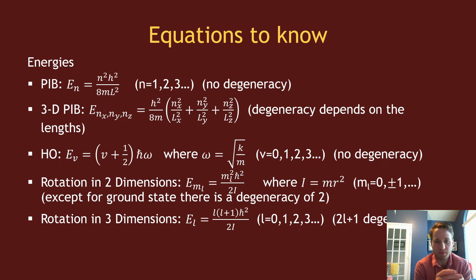Here's some of the equations I expect you to know. What are the energies for particle in a box, for the harmonic oscillator, for rotations in two and three dimensions? These are all relatively simple equations. Know the limits of the quantum numbers involved in those equations, whether or not these different systems have zero point energies, things like that.